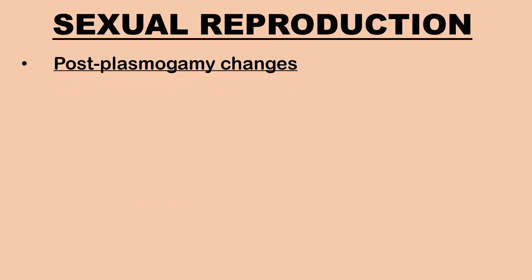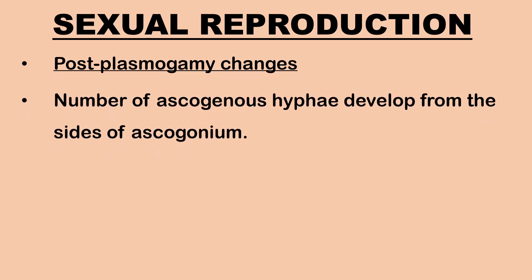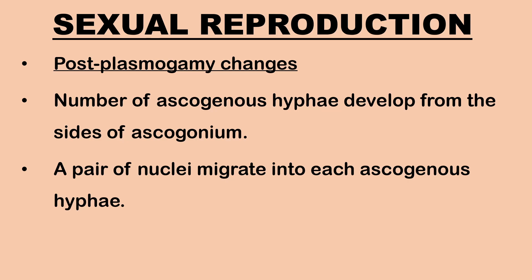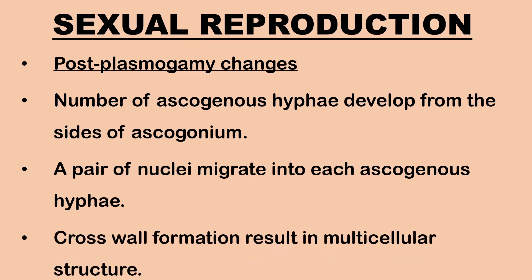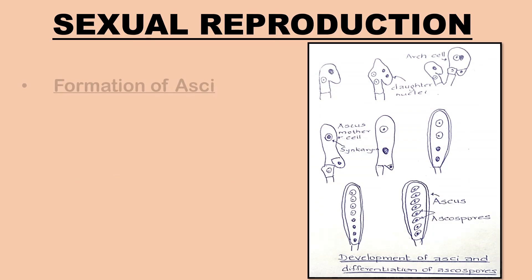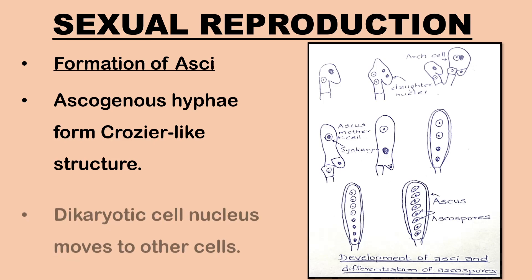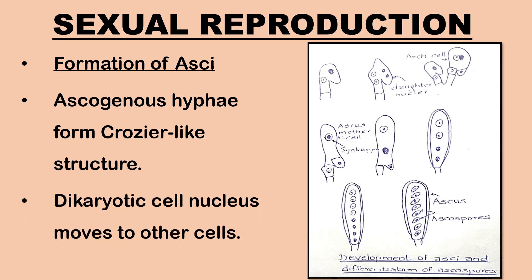Several post-plasmogamy changes occur. A number of ascogenous hyphae arise from the sides of the ascogonium. A pair of nuclei migrates into each ascogenous hypha from the ascogonium; these hyphae develop cross-walls and become multicellular. The terminal cell of the ascogenous hyphae becomes crozier-like. Nuclei of a dikaryotic cell move to other cells via the crozier method, known as the method of dikaryotization.